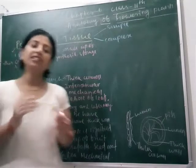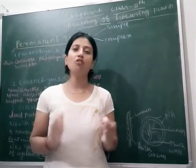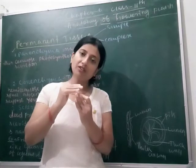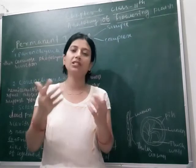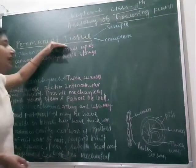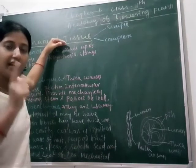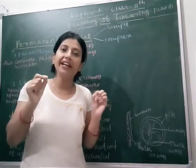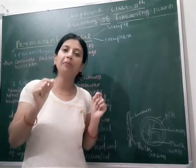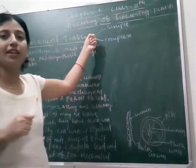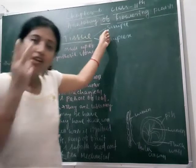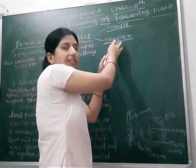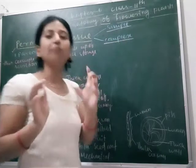Permanent tissue means these are the tissues where no cell division occurs. In the case of meristematic tissue, continuous cell division occurs in parts of the plant due to its growth. But in the case of permanent tissue, no cell division occurs. Remember, when a tissue or when a part loses its dividing capacity, it is converted into permanent tissue. Permanent tissue is again of two types: one is simple permanent and another is complex permanent.